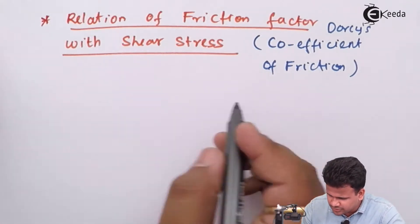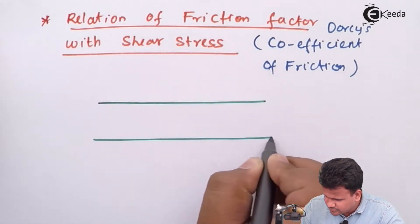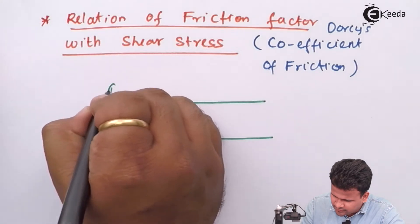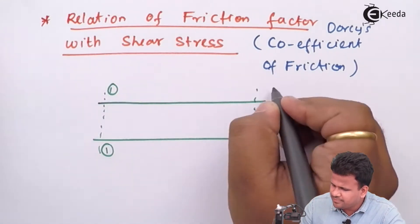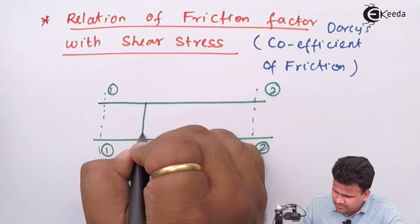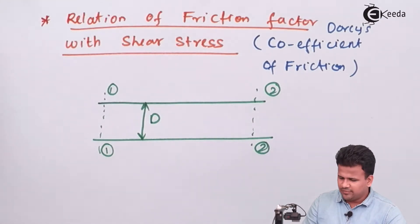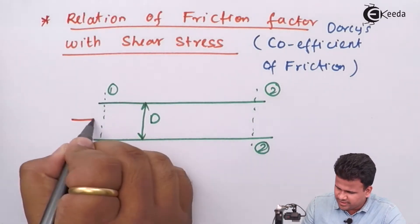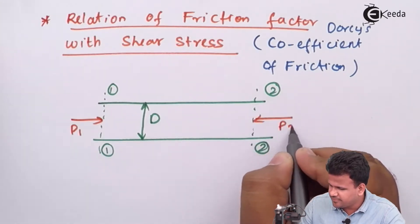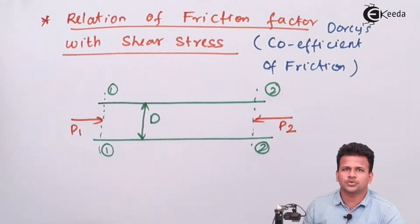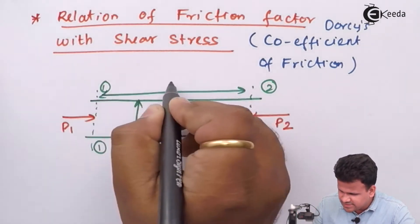We will consider a pipe with section 1-1 and section 2-2. During the entire portion between these sections, the diameter remains the same. We will consider the length of this entire pipe as L.